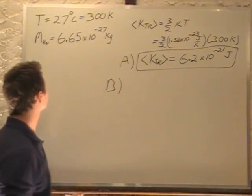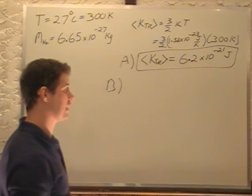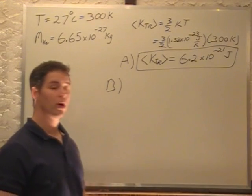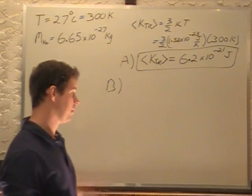Now, part B asks, given the mass of helium, 6.65 times 10 to the minus 27 kilograms, what is the average speed of the molecules if our gas is helium with this kinetic energy?